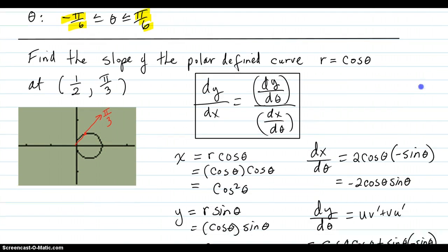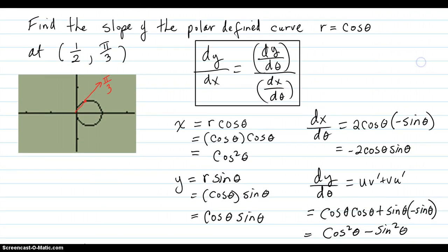Now let's go on to the second topic in this video. Find the slope of the polar defined curve r equals cosine theta. So if you graph r equals cosine theta, you get this curve over here.